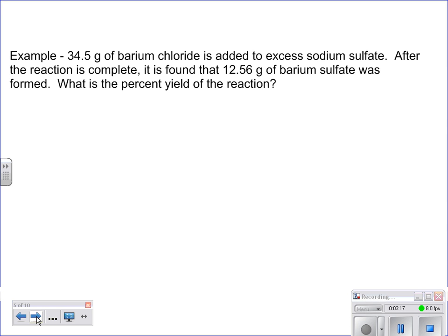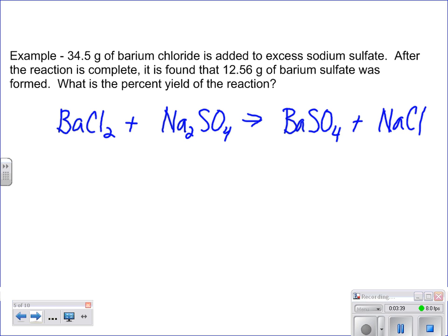It says barium chloride is added to excess sodium sulfate. So I've got BaCl2 and I've got Na2SO4. Even if it doesn't tell me what's produced, I know how to predict products here, and I can say it's going to be BaSO4 and NaCl. Of course, I have to balance this to get my coefficients, and it looks like we just need that two. Then strongly recommended is that you write this information underneath your reaction.